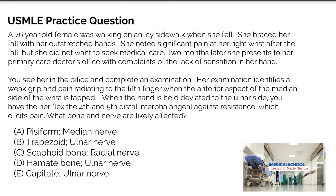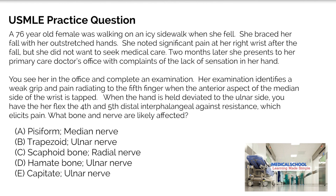Is it A, pisiform and the median nerve? B, trapezoid and the ulnar nerve? C, scaphoid bone and the radial nerve? D, hamate bone and the ulnar nerve? Or E, capitate and the ulnar nerve? Pause here and think about it, but if you're ready to proceed, let's go on to the answer.